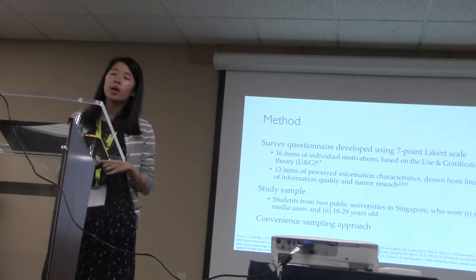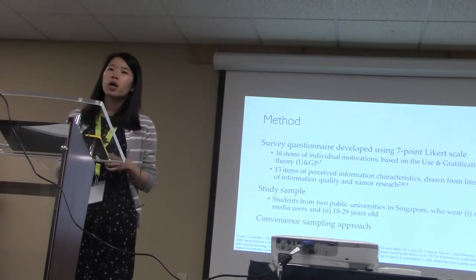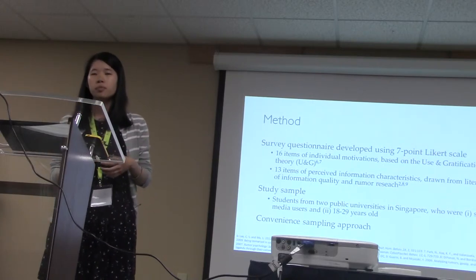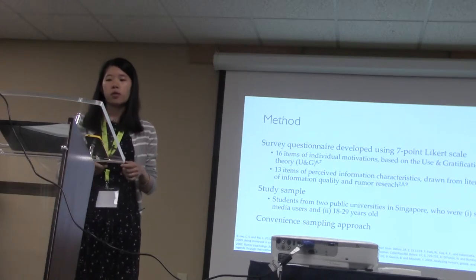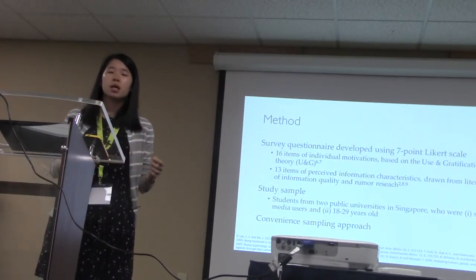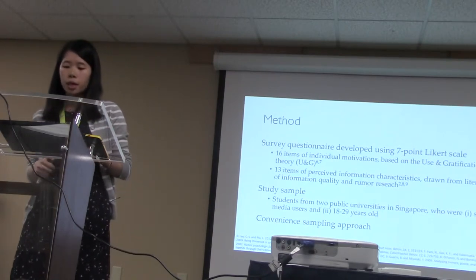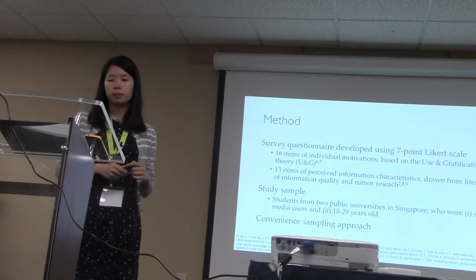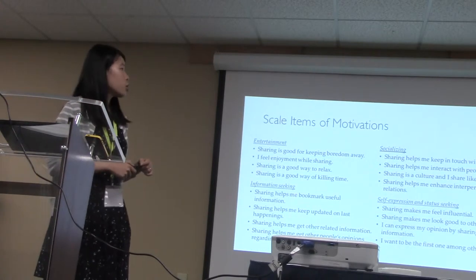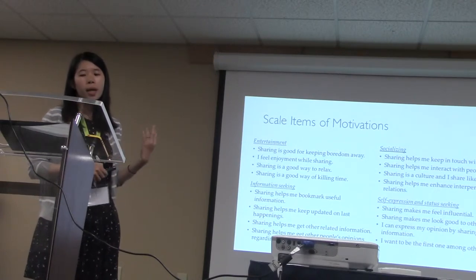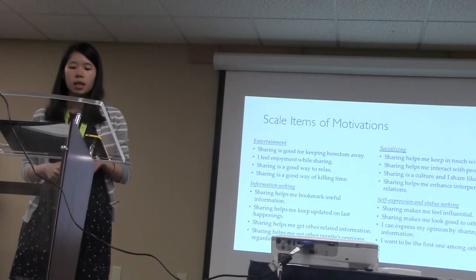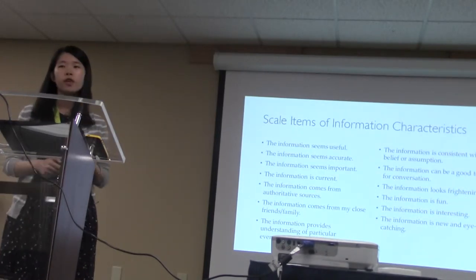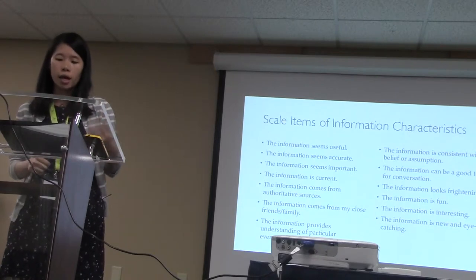The study uses a survey method. Respondents were asked questions about their reasons for misinformation sharing on a Likert scale. The items are developed based on uses and gratifications theory, as well as literature from information quality and related research. The study sample comprises students from two public universities in Singapore who are social media users between 18 to 29 years old, and the data were collected using convenience sampling. Here are the items of the motivations developed from the UNG theory, which has four main categories: entertainment, socializing, information-seeking, and self-expression. And here are the items of the perceived information characteristics drawn from information quality research.